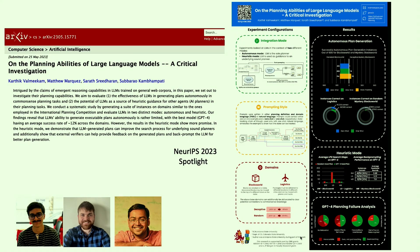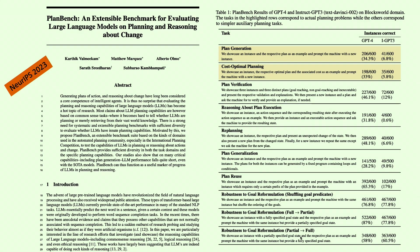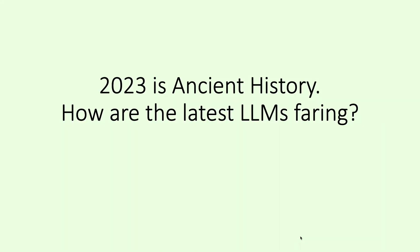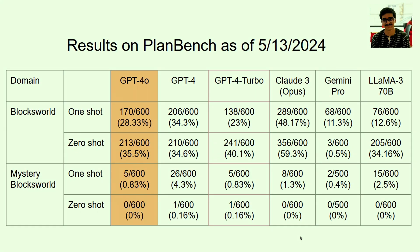That's the NeurIPS paper — it's a spotlight. And we also made a benchmark for planning based on that, which is available and people are using it. As for last week: every week there's a new LLM coming out — GPT-4O, GPT-4, GPT-4 Turbo, Claude 3 Opus, Gemini Pro, LLaMA 70B. You'll notice all of them are very close to zero on the modified Bloxworld problem, because they have no information about the renamed domain and actually have to do reasoning, which they can't do.